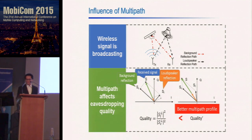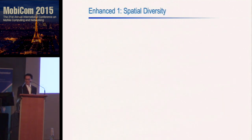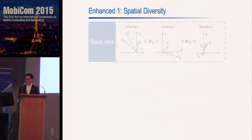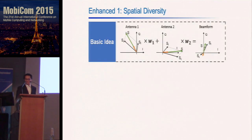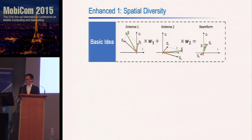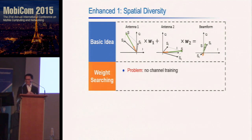To enhance audio quality, we propose two mechanisms. The first is to leverage spatial diversity using multiple antennas. Intuitively, different antennas will give different multipath profiles, and an appropriate combination of them will enhance reflections from the loudspeaker. The key question is how to find the optimal weights for different antennas, because there is no explicit channel training from the loudspeaker surface.